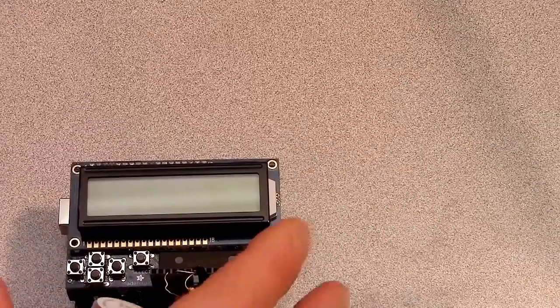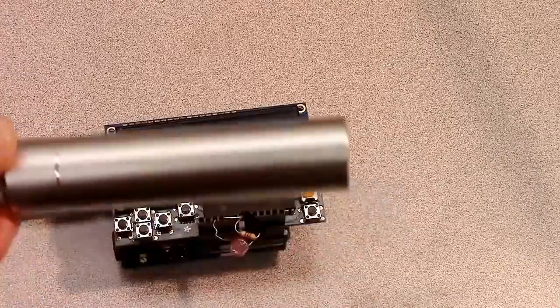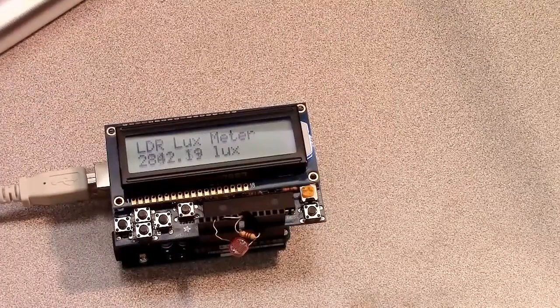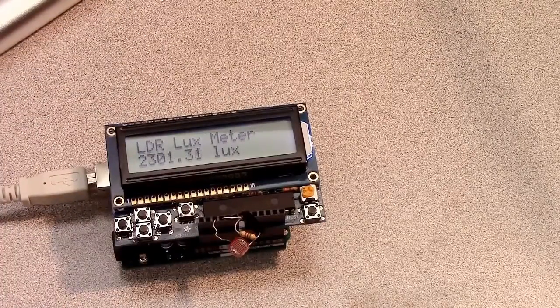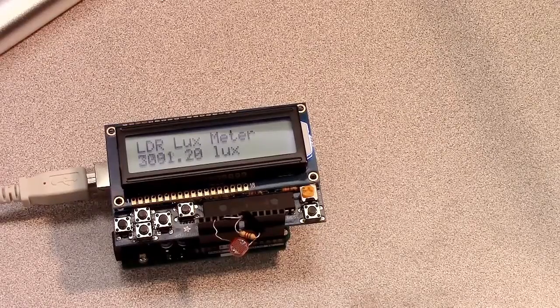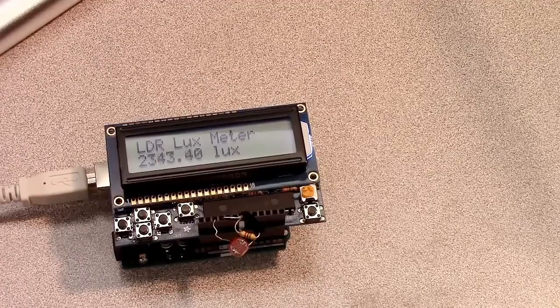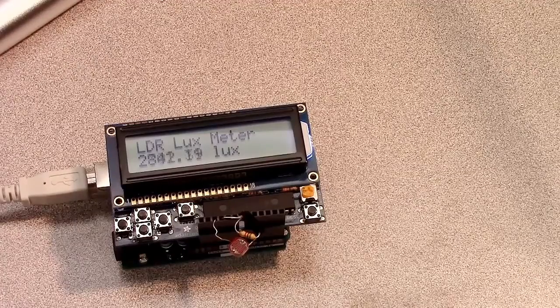Now to power the system, I'm going to use a simple USB battery. Plug it in and I've got my lux meter running. I've got a fairly bright light shining down, so it's about 2,300, jumping up to 3,000 lux. It's jumping around quite a bit as I move around and cast my shadow on the LDR.